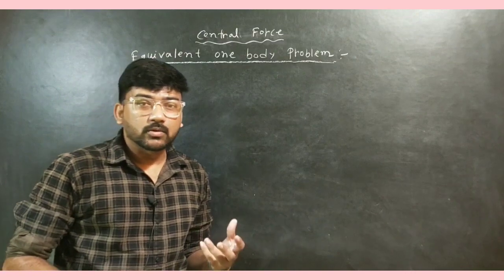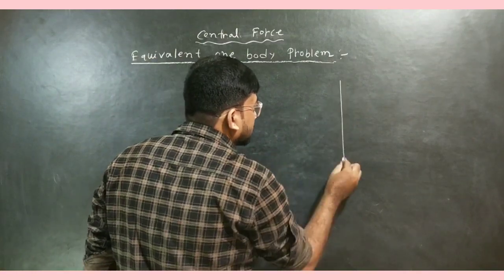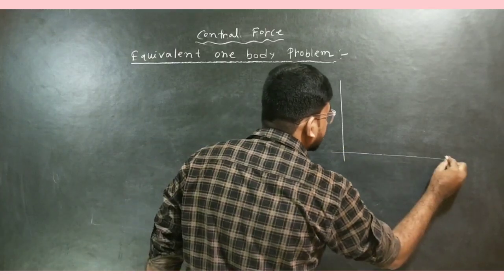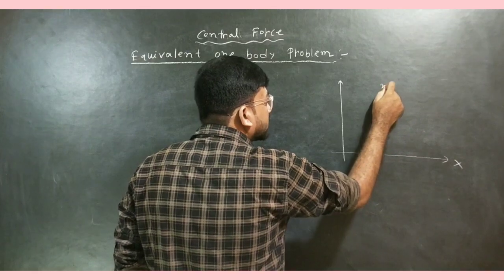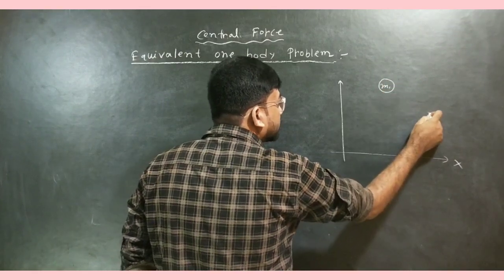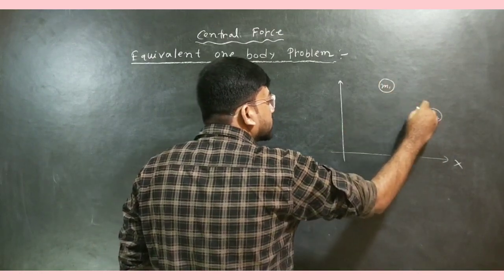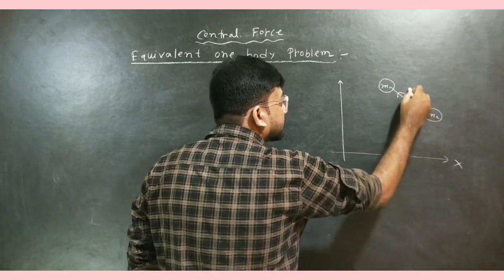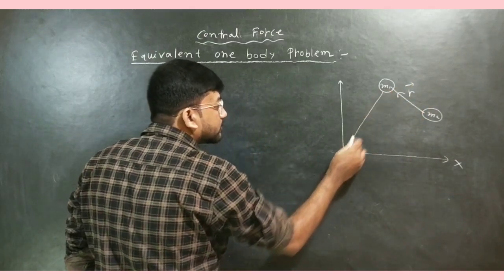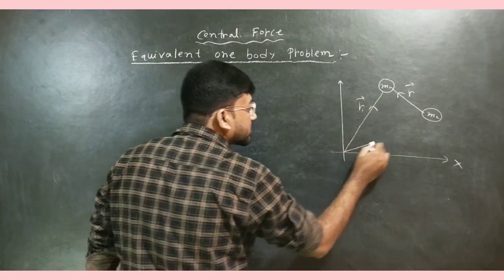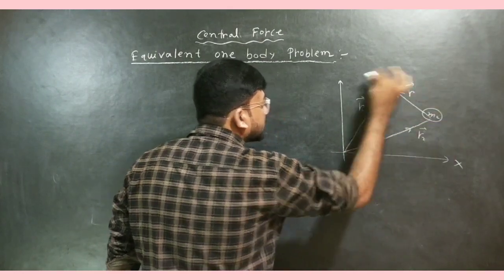Let us suppose a two-body problem. In a conventional coordinate system, we have two bodies M1 and M2, where the position of M1 with respect to M2 is R. M1 has position vector R1 and M2 has position vector R2. This is our two-body system.